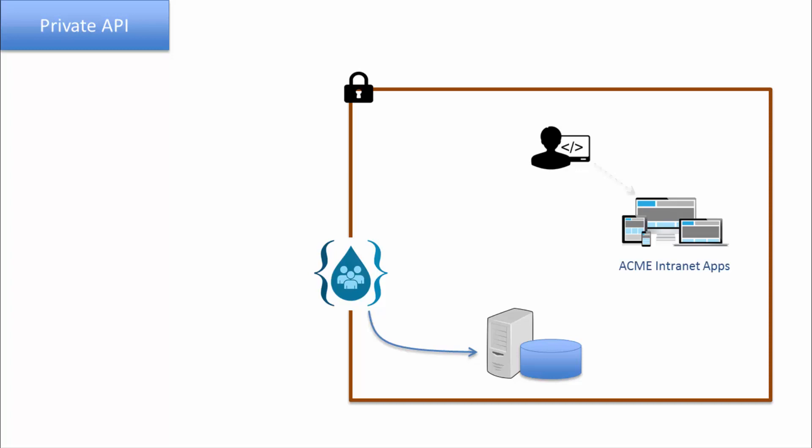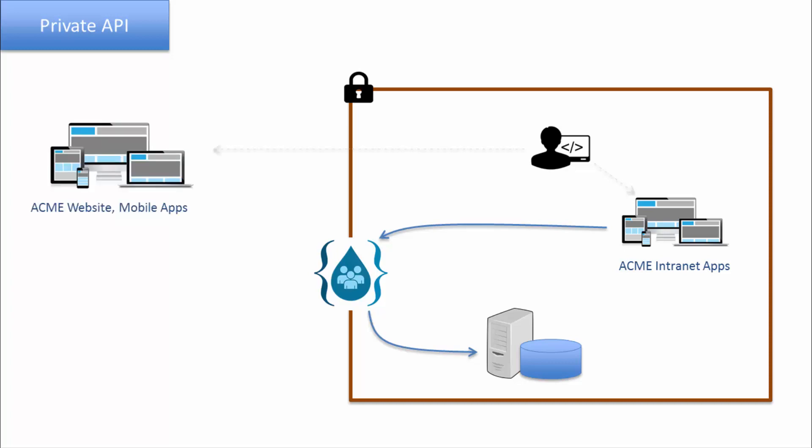These applications may be internal to the organization and use the private APIs, or they may be applications available from outside the enterprise, in which case they would use the same API. Notice that the API for private use is also sitting on the edge of the enterprise so that the external application can get access to it. If there are no public applications, then this API does not need to be on the edge — it can be within the firewall of the enterprise.